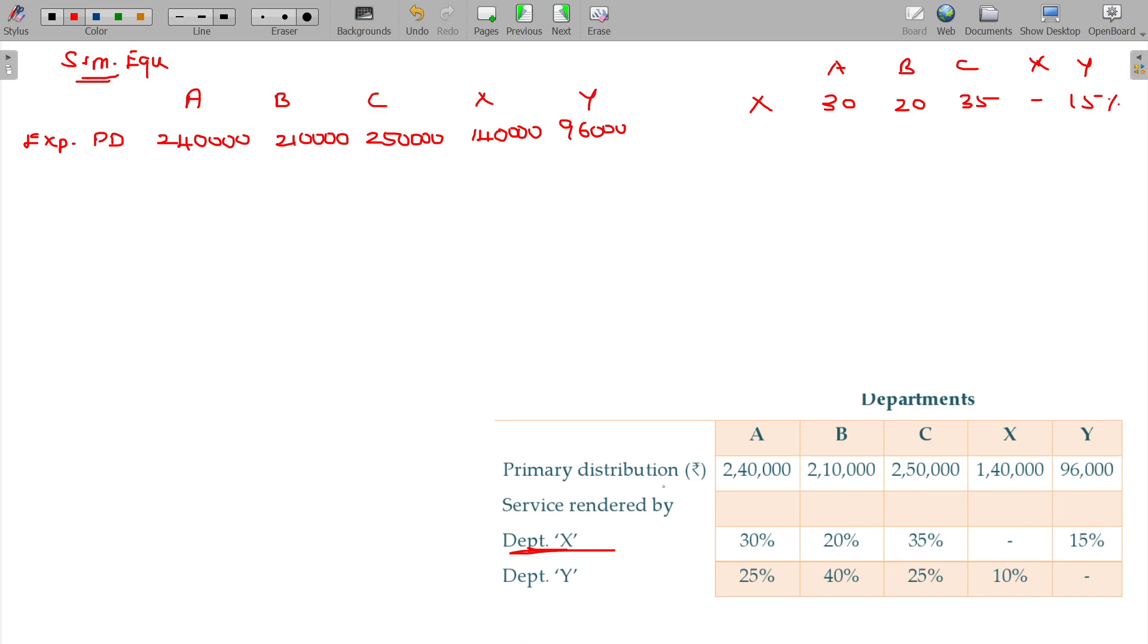Similarly, Y department overheads are distributed as 25 percentage, 40 percentage, 25 percentage, 10 percentage and dash.